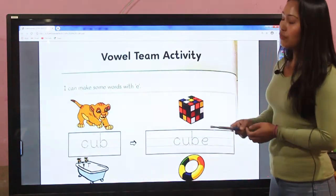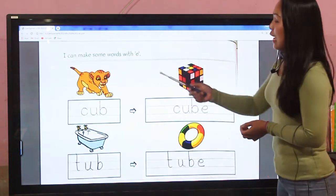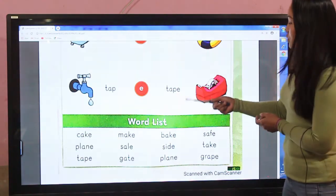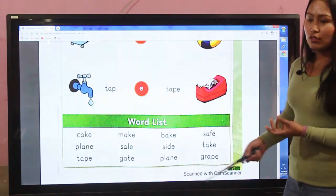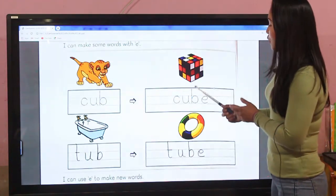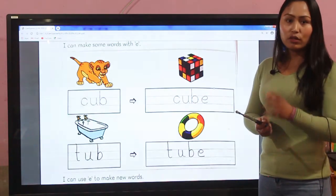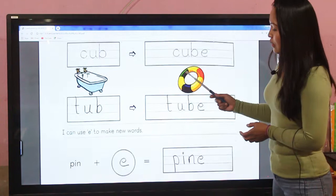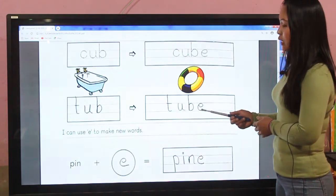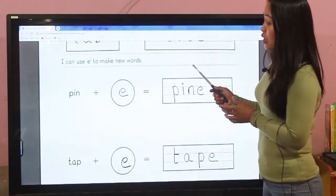Now is the turn of the vowel team activity. I can make some words with e. For example, tap - when we add e it becomes tape. We form new words. Similarly, this activity you can try in the book at home.